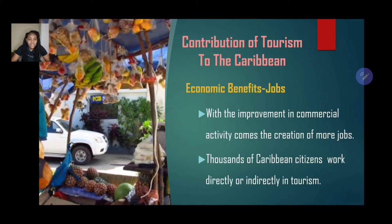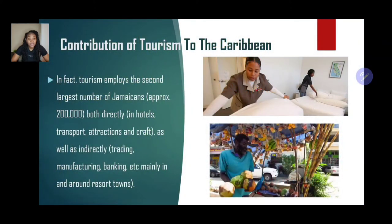So persons who are working at certain destinations in the different sectors. There are also indirect workers — examples like farmers, who produce food and may sell it to restaurants or hotels to prepare meals for tourists. They are indirectly employed because of tourism. In fact, tourism employs the second largest number of Jamaicans — for example, 200,000 — both directly in hotels, transport, attractions, and crafts, as well as indirectly in trading, manufacturing, and banking, especially in and around resort areas.